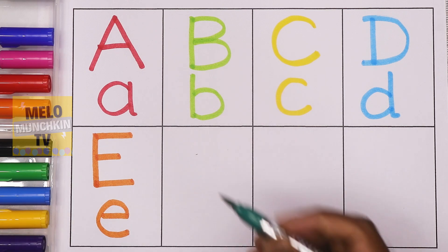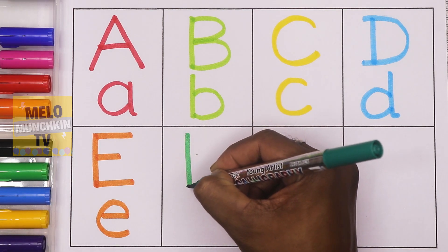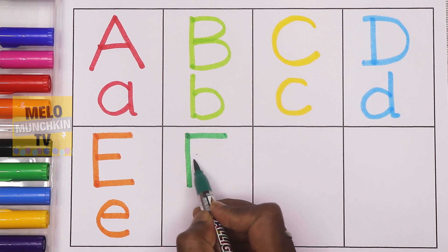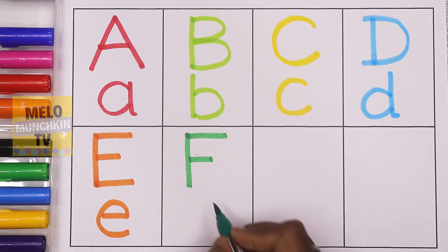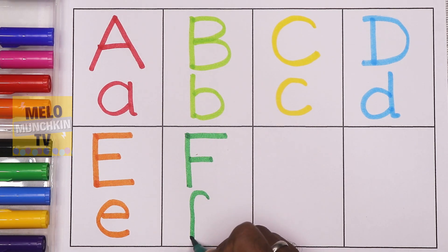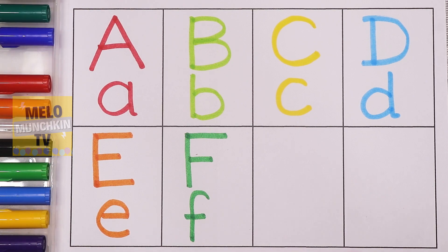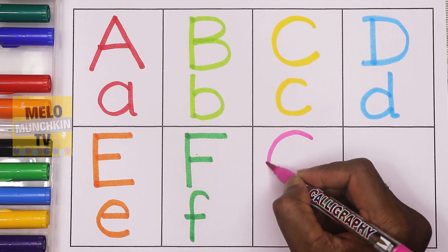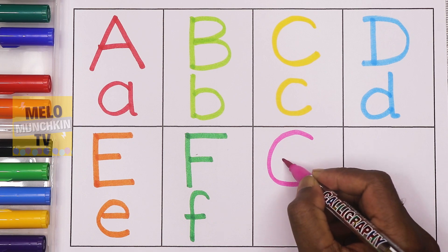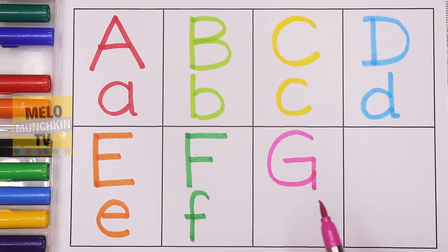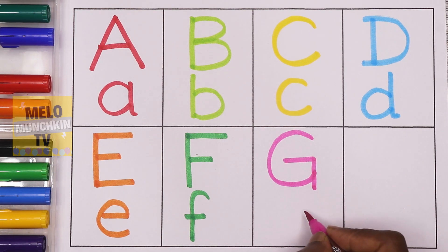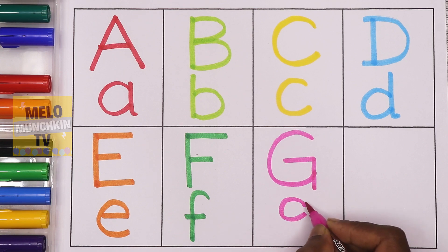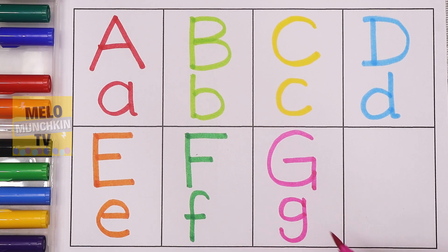Orange color. This is capital E. E for elephant. And this one is small E. E for elephant. Dark green color. This is capital F. F for fish. This is small F. F for fish.